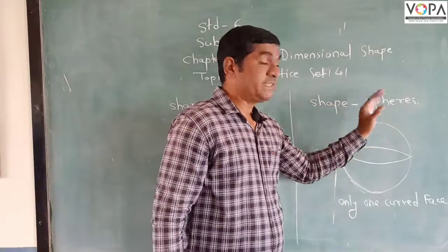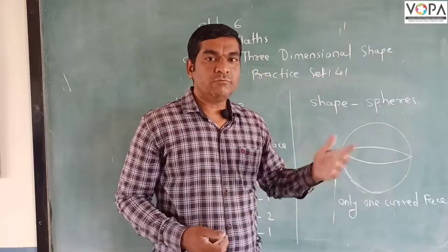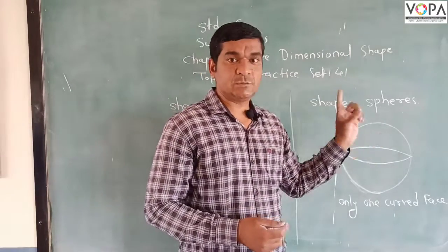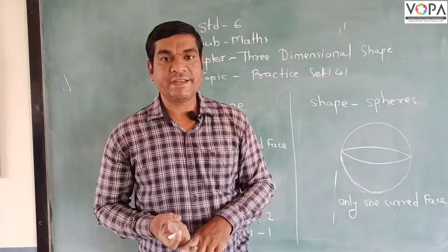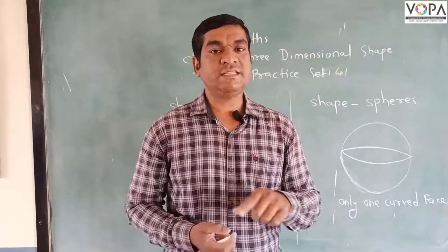So now the next shape is a sphere. So where do you find a sphere? It is not a circle, it is a sphere. In general, you play cricket with a ball. The ball is called as a sphere.